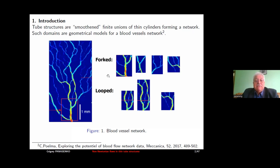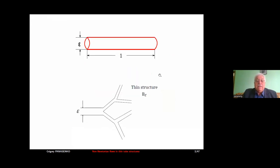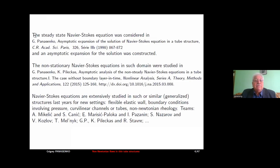Here you see some types of such networks. We idealize a little bit these real structures as domains which depend on small parameter and consist of thin cylinders. The ratio of diameter to the length of such cylinder is taken as small parameter, and so they can form trees, loops, and so on. The first papers on Navier-Stokes equations in such structures